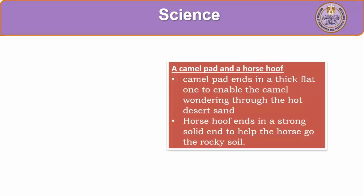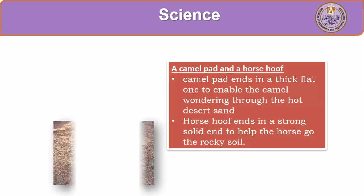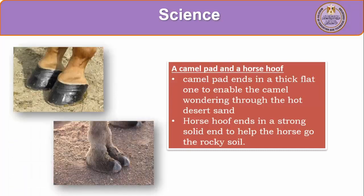Let's take a close look at the camel foot and horse hoof. The camel foot ends with a thick, flat pad that enables the camel to walk easily on hot desert sand, while the horse hoof ends in a strong, solid structure that helps the horse move easily on rocky soil. They are completely different in structure.